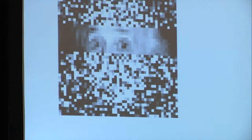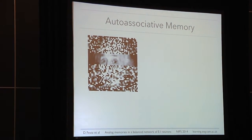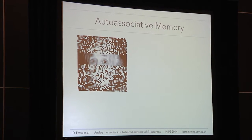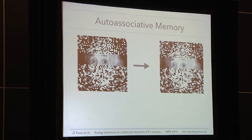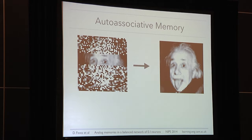I start by defining auto-associative memory. It is the capacity to reconstruct a previously stored item starting from a noisy or partial representation of it. On the left here, you see a partial image that was previously memorized by our system. If the system is able to perform auto-association, it will reconstruct it in its original form. For us humans, this is our daily task — we can recognize words in a noisy environment, spot friends from a long distance, and some of you were able to recognize Einstein in this popular picture.